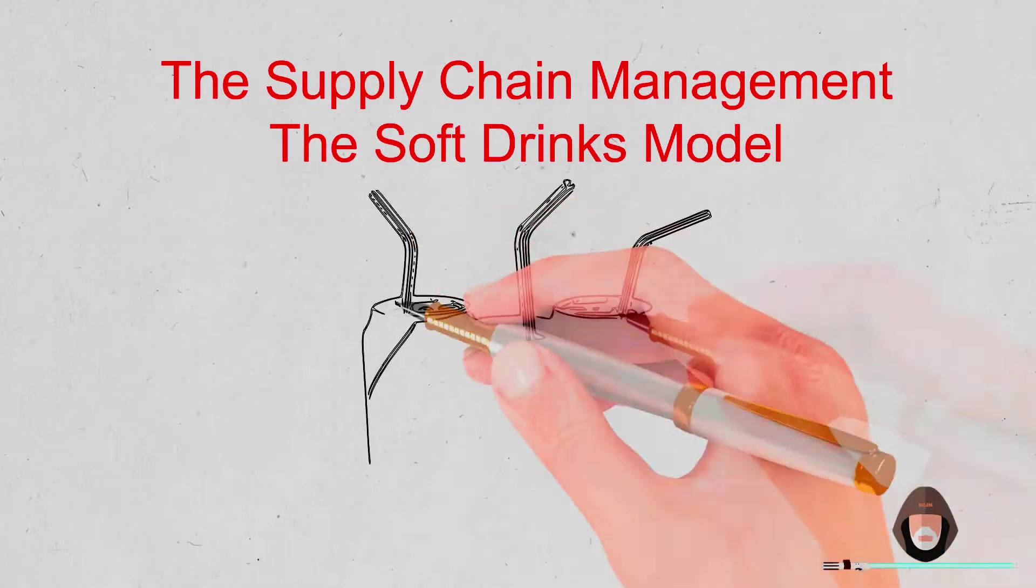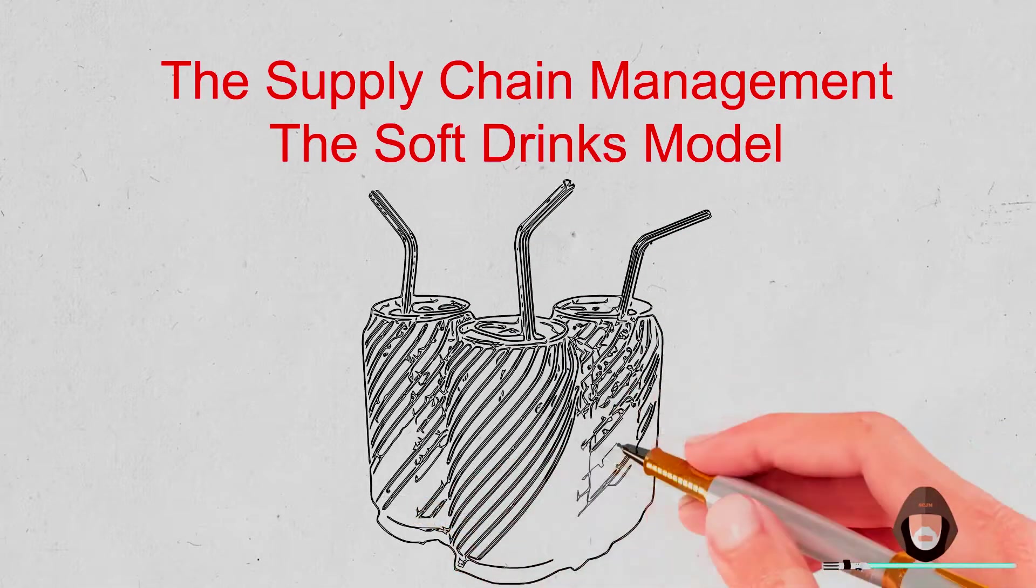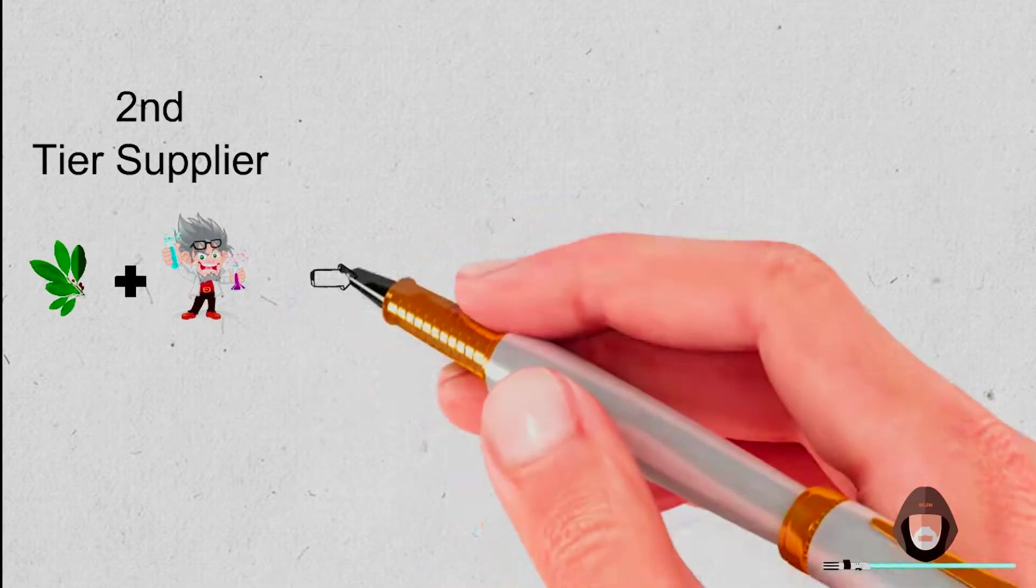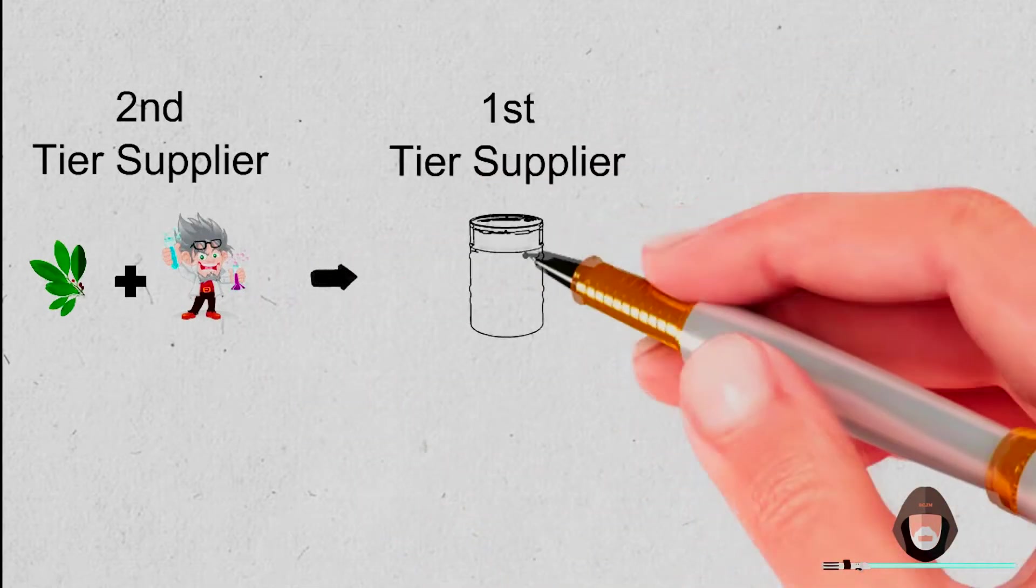To better understand the definition, let's have a look at the soft drinks model. The supply chain is made of several tiers. The soft drink manufacturer's direct supplier is a first tier supplier. For example, the Coke syrup is a mix of flavors.